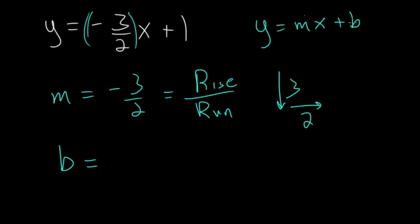And then our y-intercept, b, for this slope-intercept form is 1. So that tells us that our graph, the equation of this line, is going to go through the y-axis at a y value of 1.